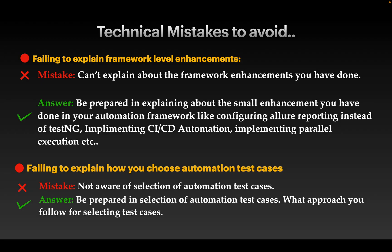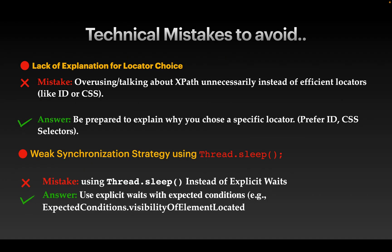The next mistake is failing to explain how you choose automation test cases. You might work in test management tools like Jira or Bugzilla. From a list of one to two thousand test cases, you should explain the process — how you automate critical high-priority test cases first, do in-sprint automation in parallel, and then go for low-priority test case automation once that's complete.